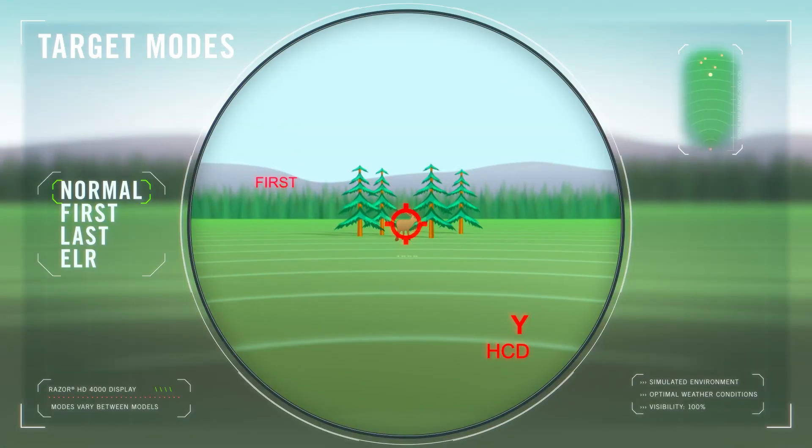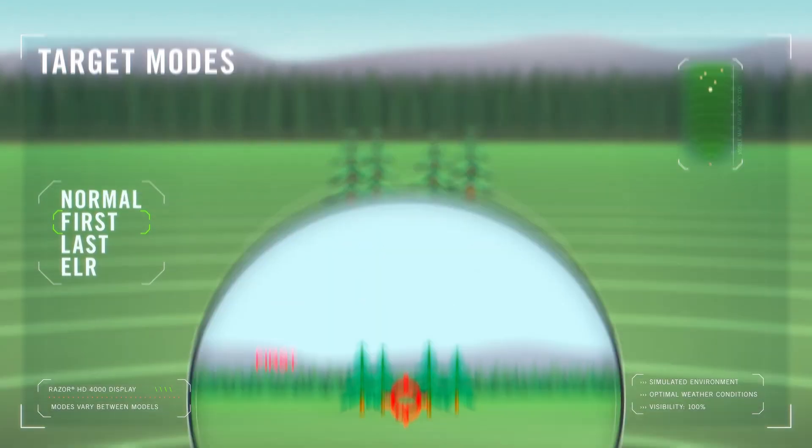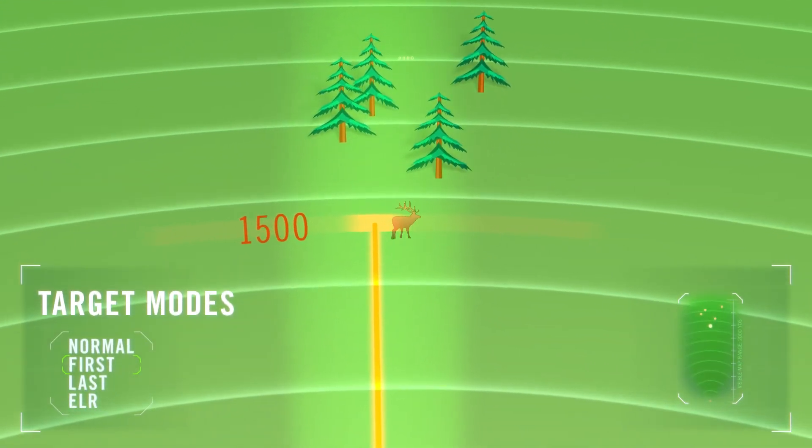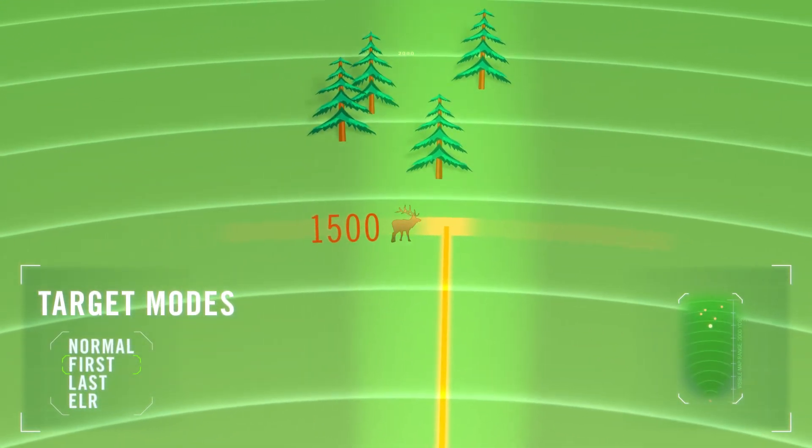First mode displays the closest distance when ranging. This mode is ideal for ranging a smaller target in front of other larger or more reflective objects.